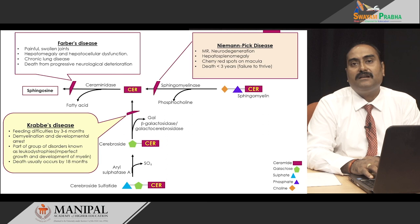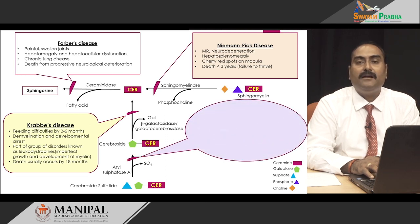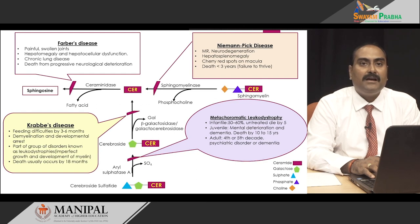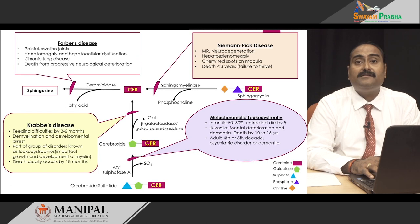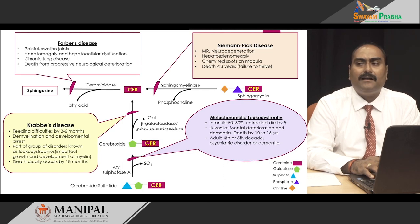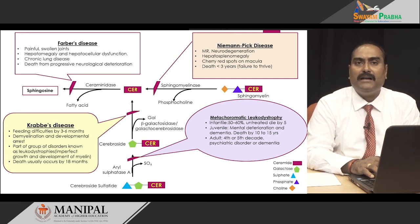If there is deficiency of the enzyme arylsulfatase A, then the disorder caused is known as metachromatic leukodystrophy. The symptoms are almost the same as Krabbe's leukodystrophy — there is developmental arrest and problems with myelin formation. There are 3 varieties: infantile, juvenile, and adult onset. The infantile form, most common at 50–60%, is very severe; untreated patients generally die by the age of 5. The juvenile form is less severe, with major symptoms being mental retardation or dementia, and death by 10–15 years. In adult onset, the disease begins in the 4th to 5th decade of life with psychiatric symptoms or dementia, and life expectancy is somewhat better than the infantile and juvenile forms.